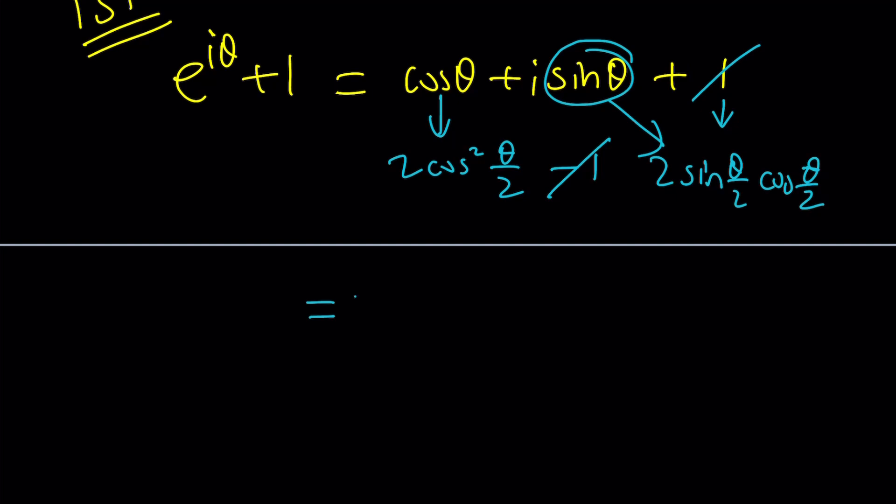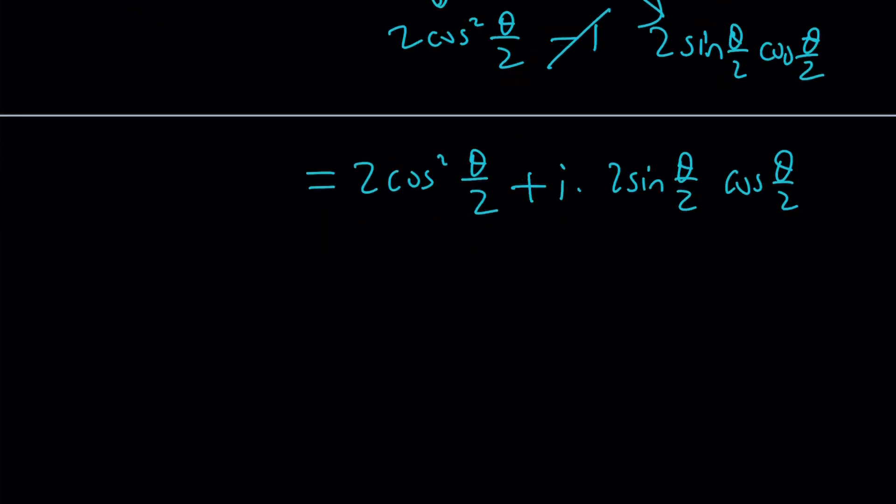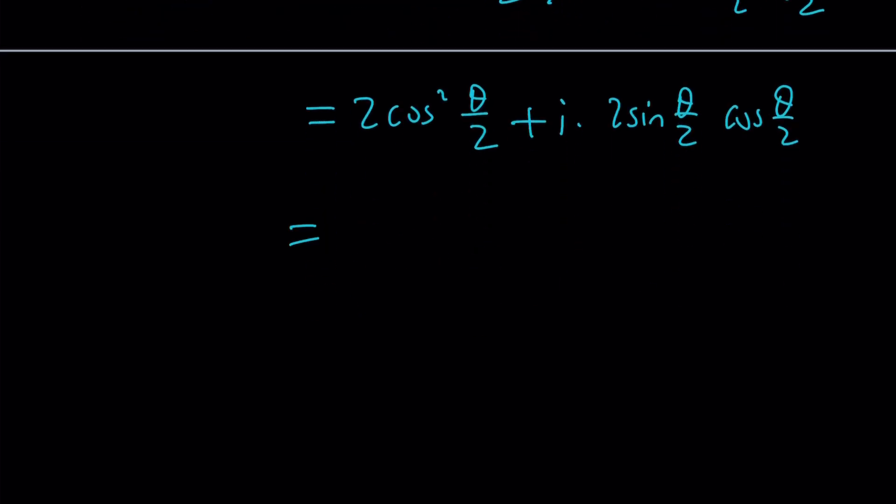So now we have the following two cosine squared theta over two plus i times two sine theta over two times cosine theta over two. You see, because we used the double angle formula for sine, I think this method is different. Now, I do see a common factor, which is two cosine theta over two. So I'm going to pull that out. And then inside, I'm going to have cosine theta over two plus i times sine theta over two.